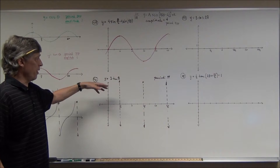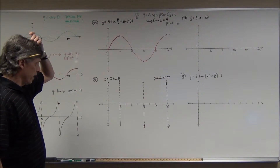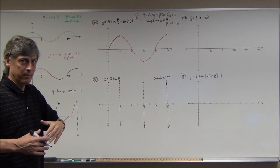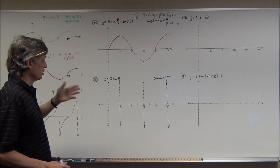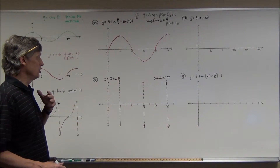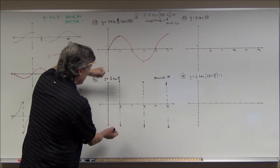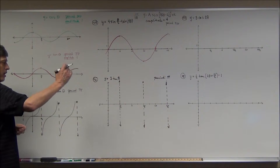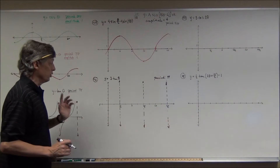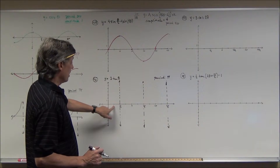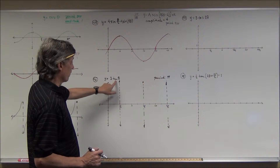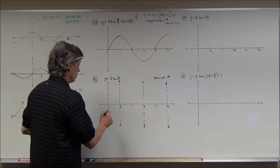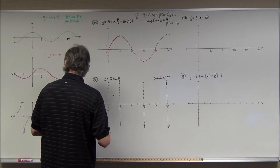Now, what does the factor of 3 do? There is no amplitude for tangent because tangent goes up forever, so there's no maximum and no minimum. Amplitude is defined as (max − min) / 2, so there's no amplitude here. But the best I can do is think of this as a vertical stretch — it's going to make the graph skinnier-looking, going up more quickly.